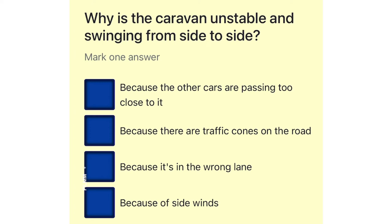Why is the caravan unstable and swinging from side to side? Because the other cars are passing too close to it. Because there are traffic cones on the road. Because it's in the wrong lane. Because of side winds.